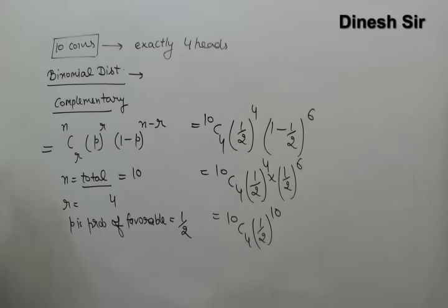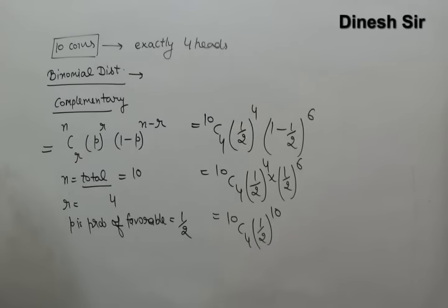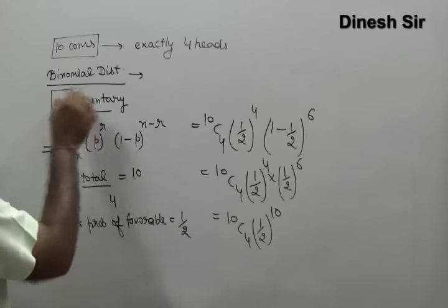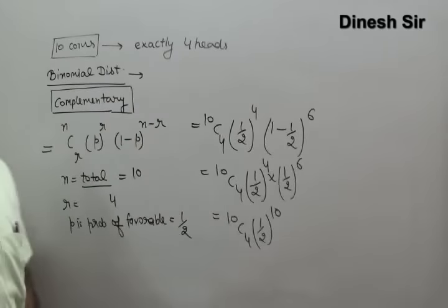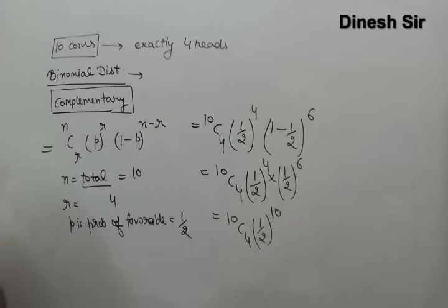That is how we understand the concept of binomial distribution. This concept is generally used where the number of events is large. However, one important condition: the events must be complementary to each other. Only then can we apply this process.